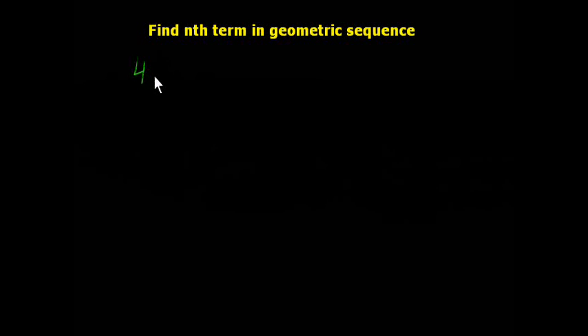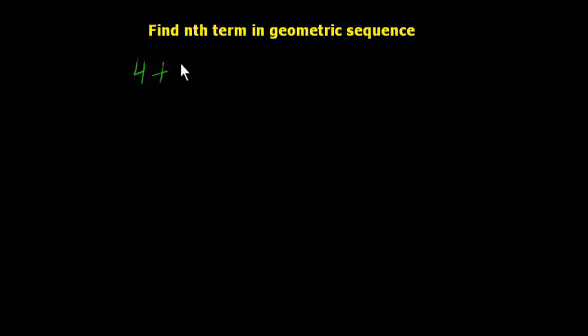Hello dear friends, today we will teach you to find the nth term in a geometric sequence. I am taking one example. Suppose this is a GP series: 4, 12, 36. Its ratio, r, is equal to 12 divided by 4, which is 3.